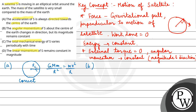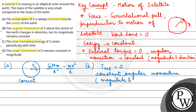Now in option B, it is stated that the angular momentum about the center of the Earth changes in direction but its magnitude remains the same. However, because the external torque is 0, the angular momentum will be constant — both in magnitude as well as direction. So option B is incorrect.